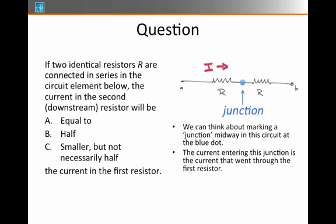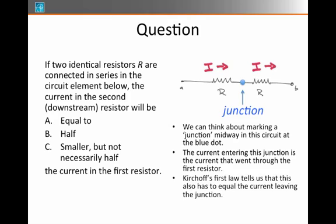I know that all the current entering the junction is basically coming from the upstream resistor. So it's the current that went through the first resistor. Any current that's leaving that junction has to equal the current that's entering that junction. That's because of Kirchhoff's first law.